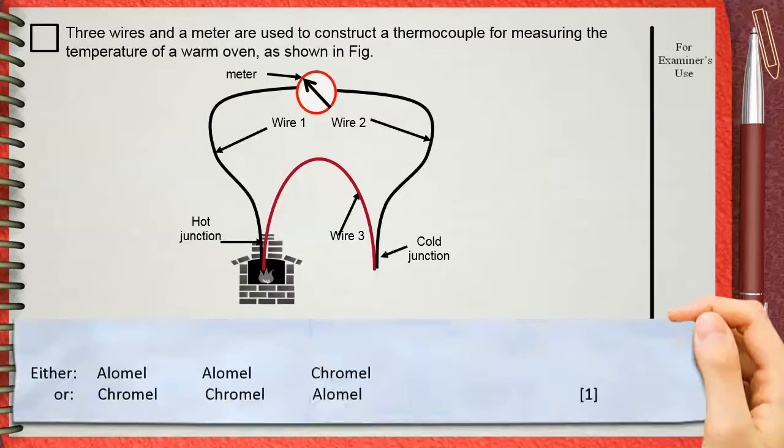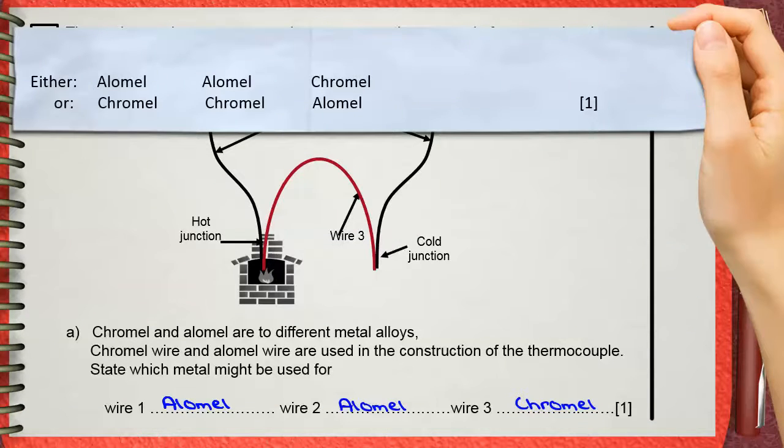The mark scheme gives two possibilities. You can say alumel alumel and wire three will be chromel, or you can say that wire one will be chromel and wire two will be chromel, wire three will be alumel.